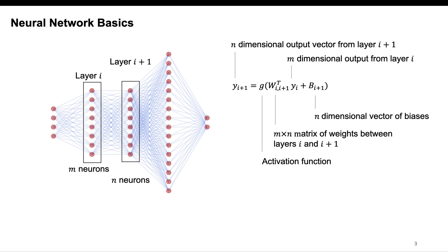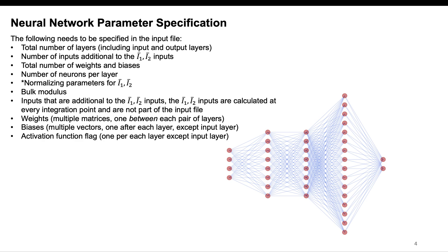This is the basic thing you need to know about neural networks in order to fully specify the neural network in the input file and use our UMAT. The things you will need to specify in the input file are: the total number of layers including the input and output layers, and the number of additional inputs with respect to just the I1 and I2 inputs. The neural network has to take in these two isochoric invariants and output the derivatives, but if you train your neural network with additional inputs beyond I1 and I2, that is totally fine — you just need to specify that in the input file.